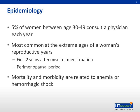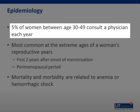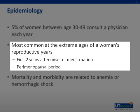DUB is a common gynecological problem. Approximately 5% of women between the age of 30 to 49 will consult a physician each year. It is most common at the extreme ages of women's reproductive years. Most cases of dysfunctional uterine bleeding in adolescent girls occur during the first two years after the onset of menstruation, when their immature hypothalamic-pituitary axis may fail to respond to estrogen and progesterone, resulting in anovulation.